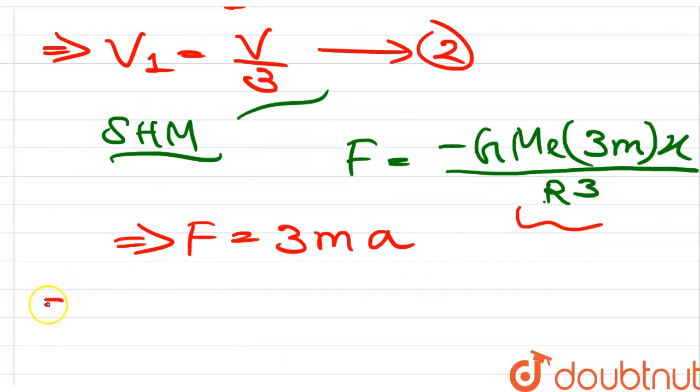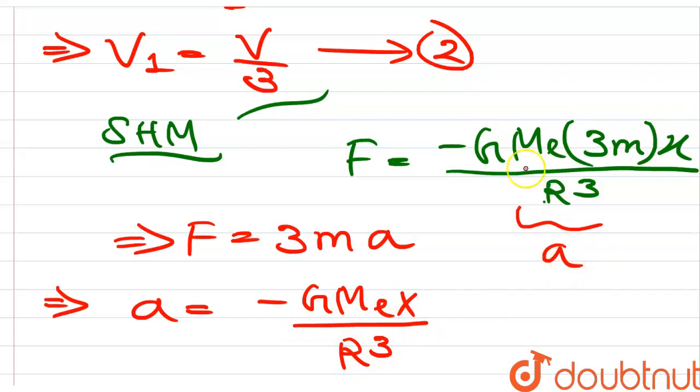So let's put acceleration value. Acceleration is equal to minus GMₑ times x divided by R cube. This one is acceleration.